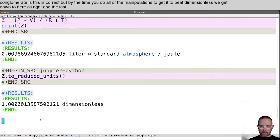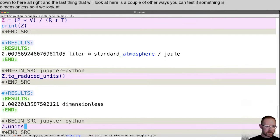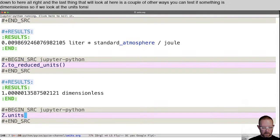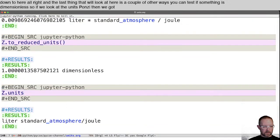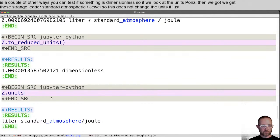All right. And the last thing that we'll look at here is a couple of other ways you can test if something is dimensionless. So if we look at the units on Z, then we get these strange liter standard atmosphere slash joule. So this does not change the units. It just displays what it is in those.